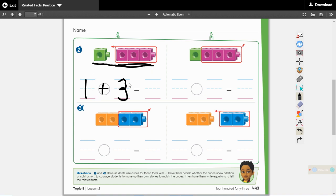1 plus 3. And then we count the entire group together for addition. 1 plus 3 equals 1, 2, 3, 4. 4 is the answer when we put 1 and 3 together.